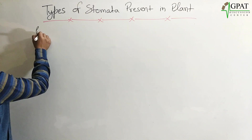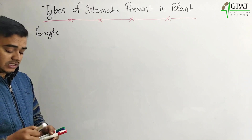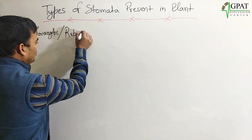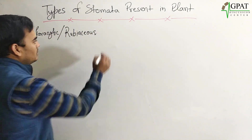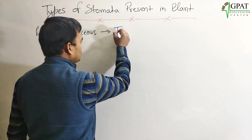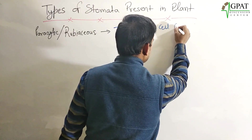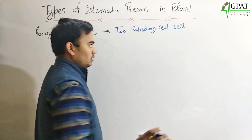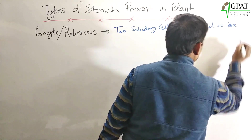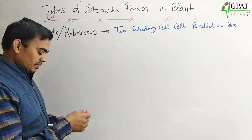So I will discuss them one by one. The first stomata is paracytic stomata, also known as Rubiaceous stomata. These paracytic stomata have two subsidiary cells parallel to the central pore.